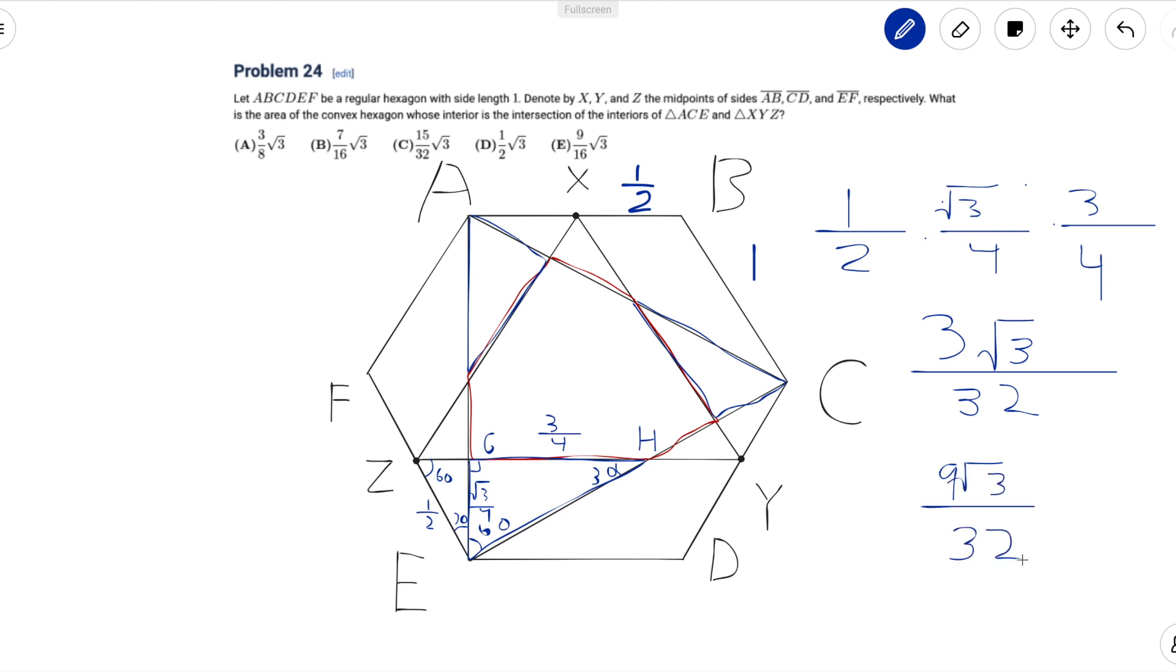Now that we have the area we want to cut out let's find the area of triangle ACE. ACE is an equilateral triangle which means we can use the formula for the area. But what's the side length for AC? Well since ABC is a triangle with angles 120, 30, and 30 that means that AC is root 3. So the area is just root 3 squared times root 3 over 4 which is just 3 root 3 over 4.